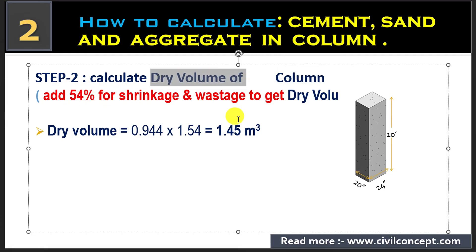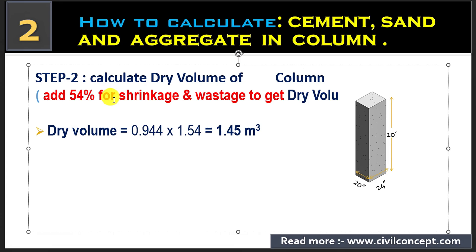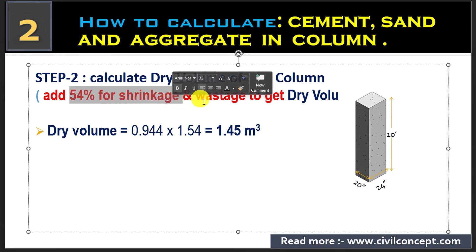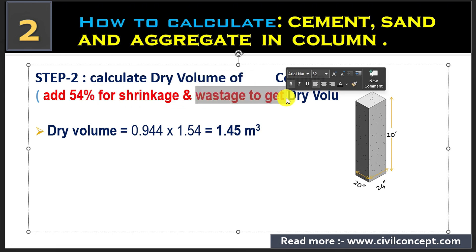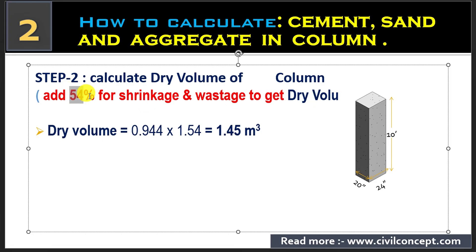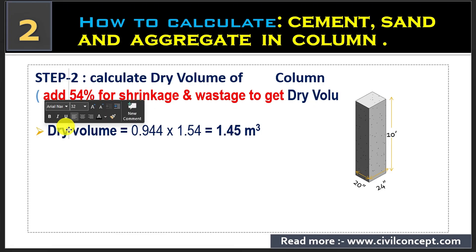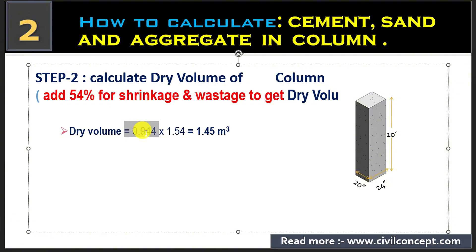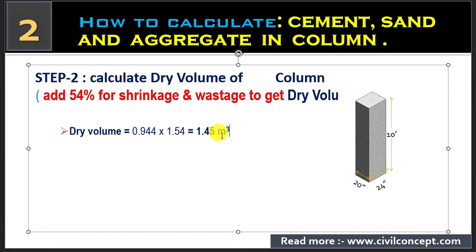We have to convert it into dry volume because we always get the cement, sand, and aggregate in dry condition. To convert wet volume into dry volume, we add 52 to 54 percent for shrinkage and wastage. I am assuming 54 percent here, so dry volume will be 0.944 into 1.54, meaning we have added 54 percent of the concrete. After multiplying this we get 1.45 meter cube, and this is the dry volume of the concrete for this column.